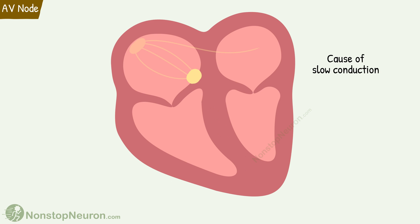The cause of this slow conduction is the fewer number of gap junctions in the AV nodal cells, so the resistance to conduction is more. That completes the AV node.